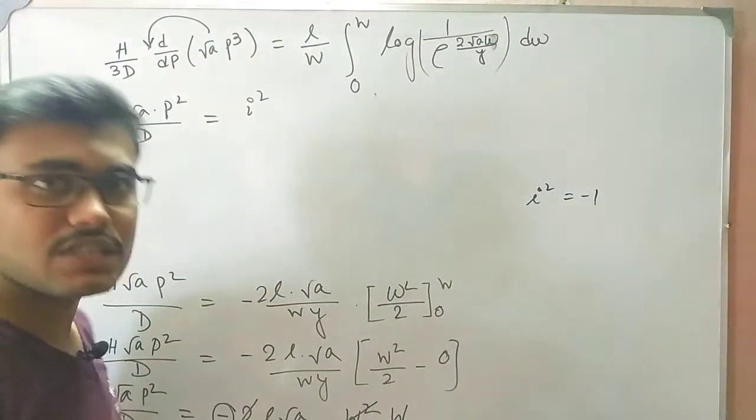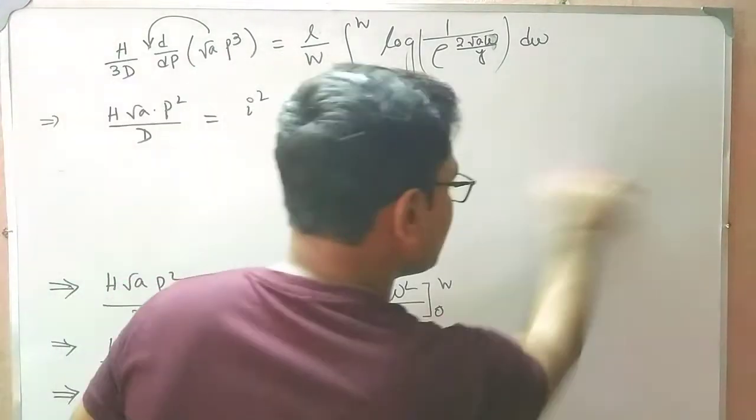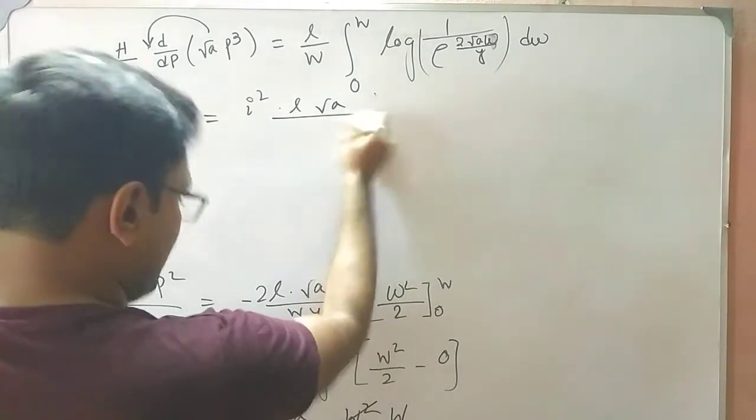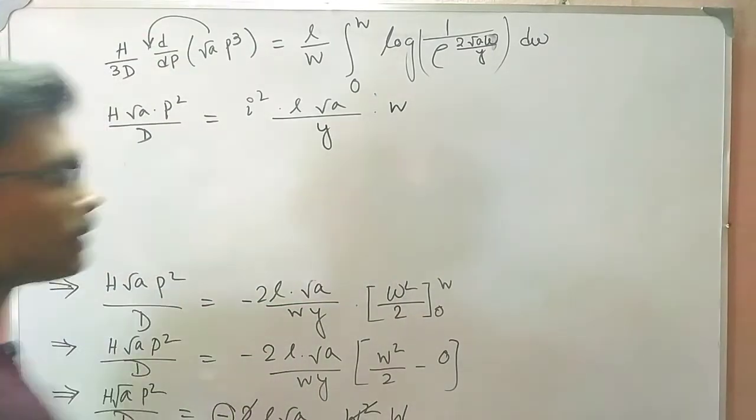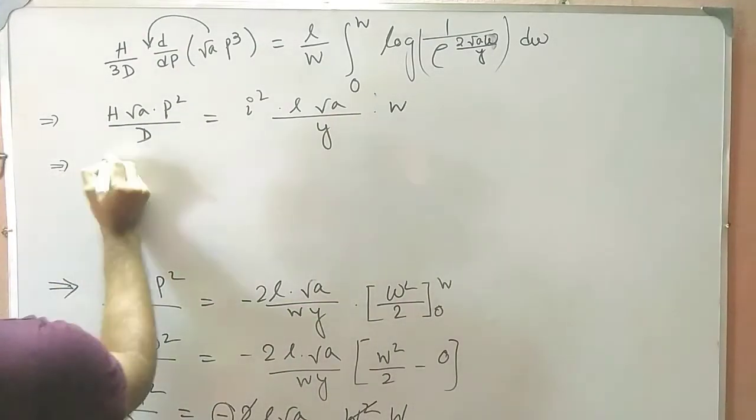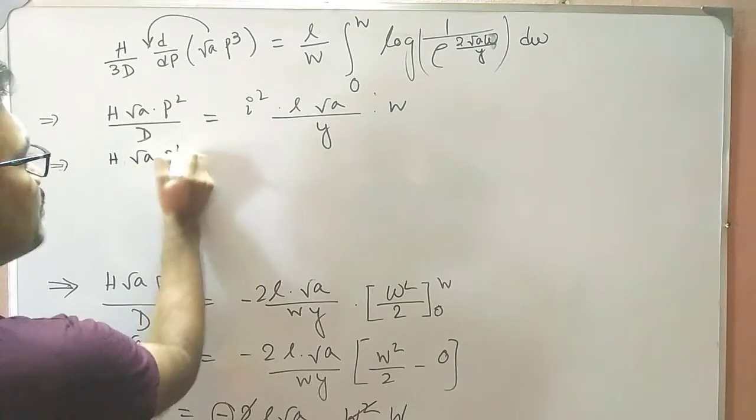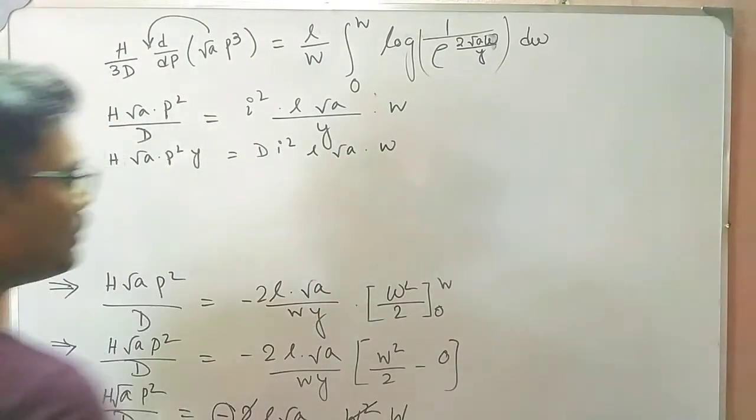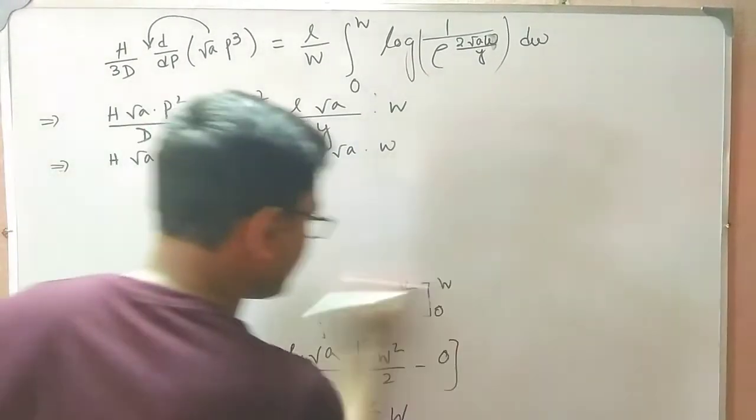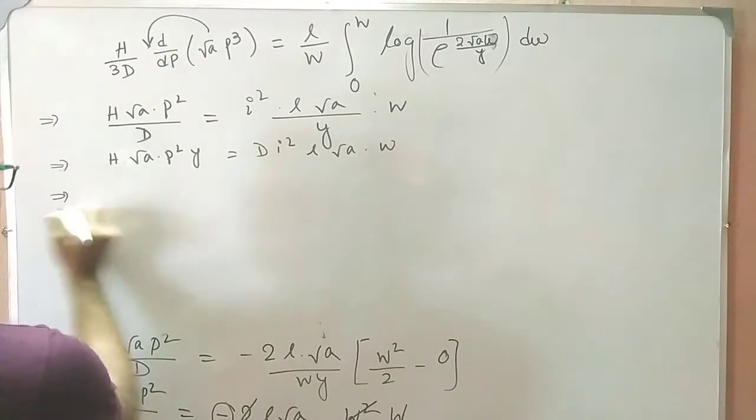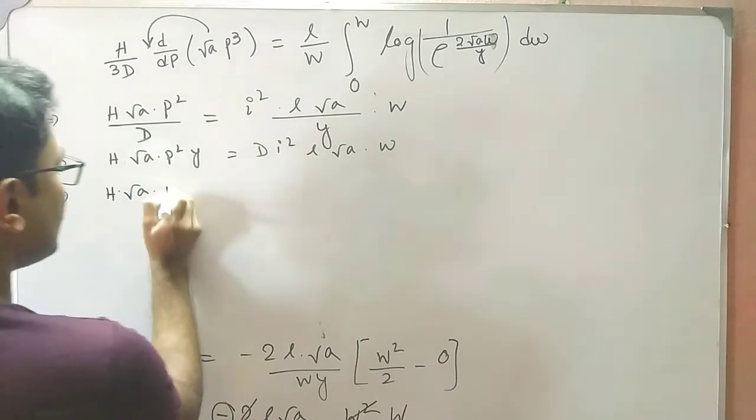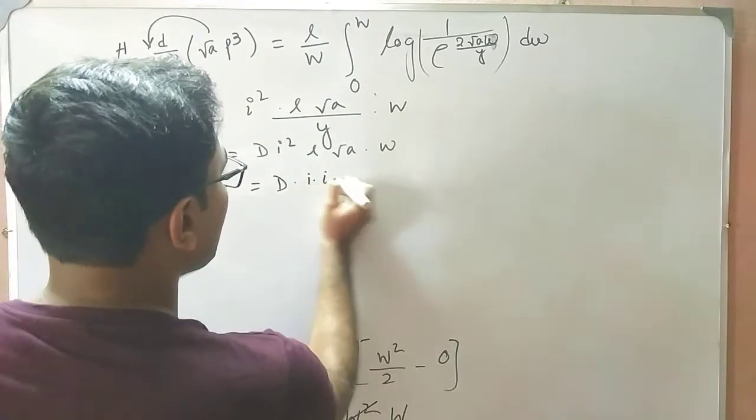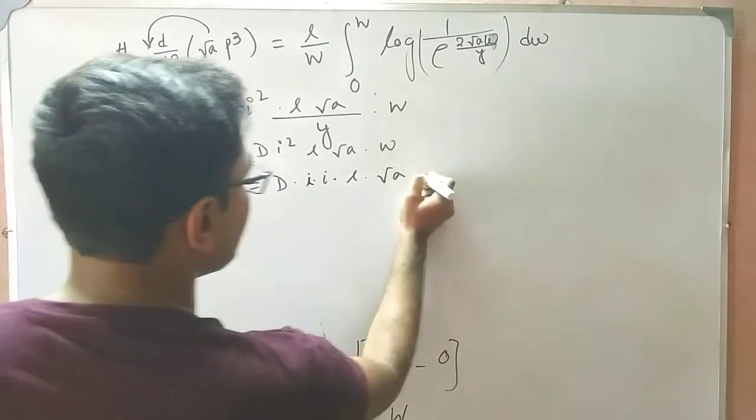This is the main thing: i² * L√a/y * W. I am multiplying this one to this side: H√a*p²*y = D*i²*L√a*W. And then you can write H*√a*p*p*y = D*i*i*L*√a*W.